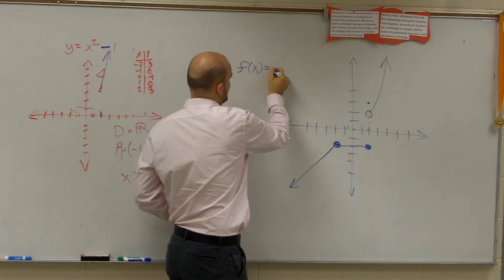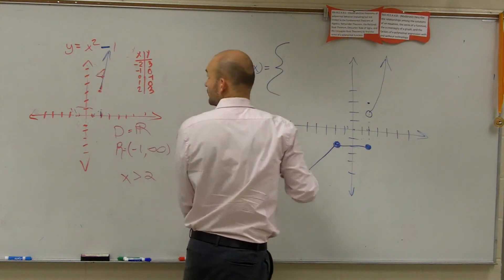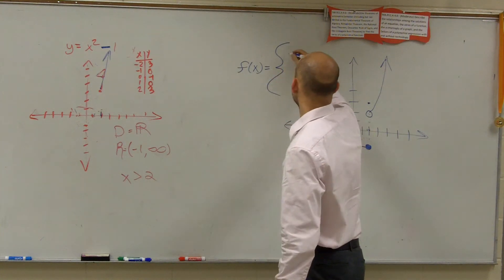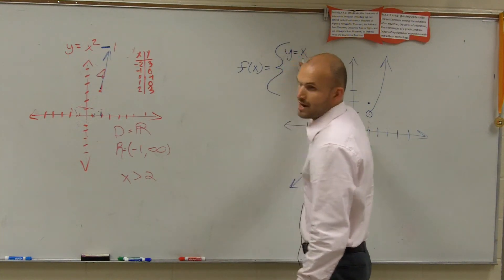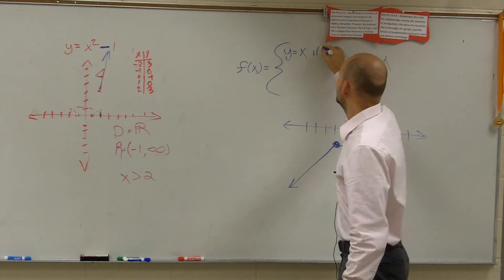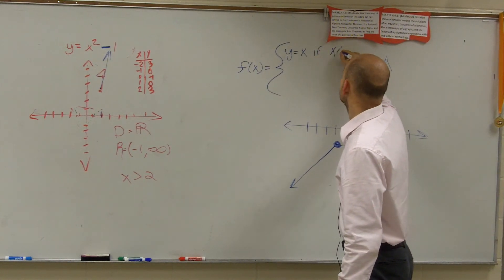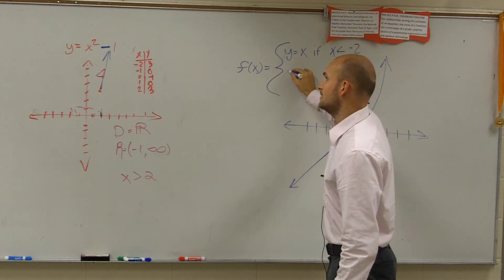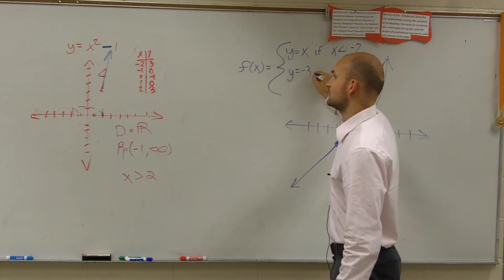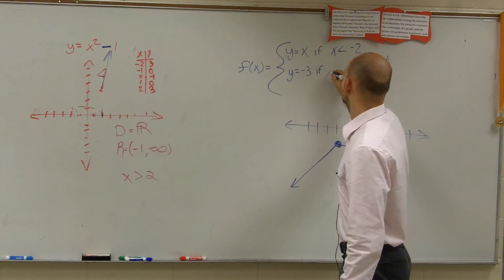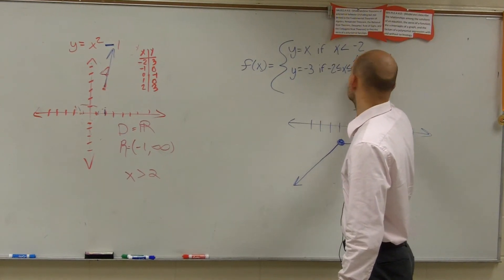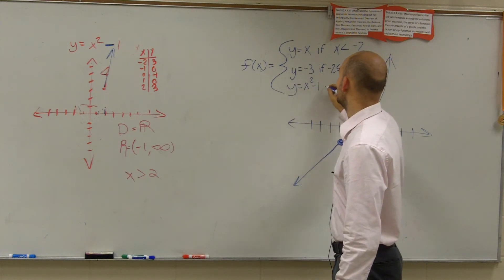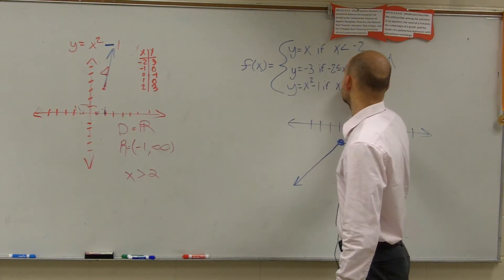F of x equals the first one, which is y equals x. So you graph y equals x if x is less than negative 2. So graph y equals negative 3 if negative 2 is less than x, which is less than 2. And then graph y equals x squared minus 1 if x is greater than 2.